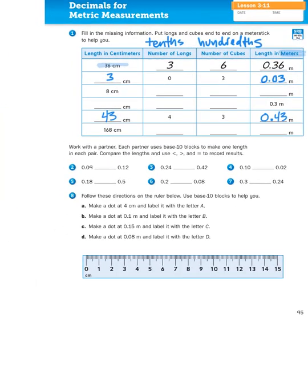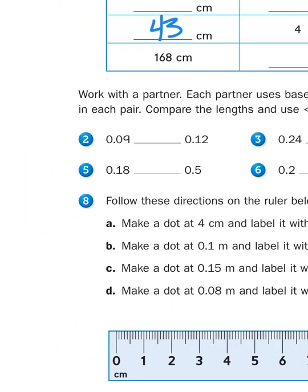Now, let's take a look at the next set of problems. It says compare the lengths and use less than, greater than, or equal to record results. They ask you to work with a partner and use base 10 blocks to manipulate. If you are playing along at home in a virtual classroom scenario, you won't have a partner to work with. So you might have to just do this all by yourself. But you guys are smart, and I bet you'll all be able to figure it out individually. For example, number 2 says 0.09 is blank compared to 0.12.